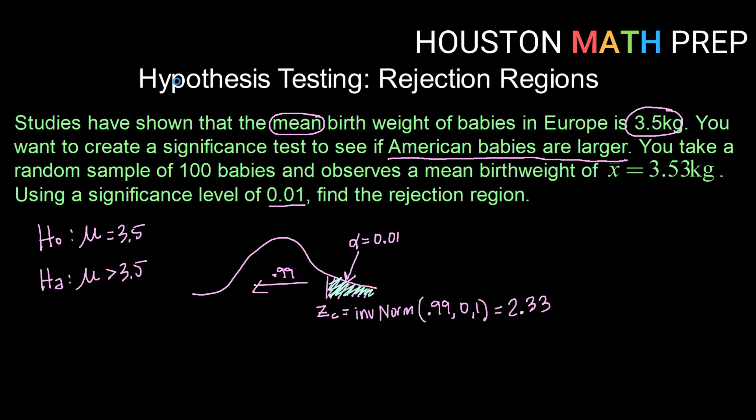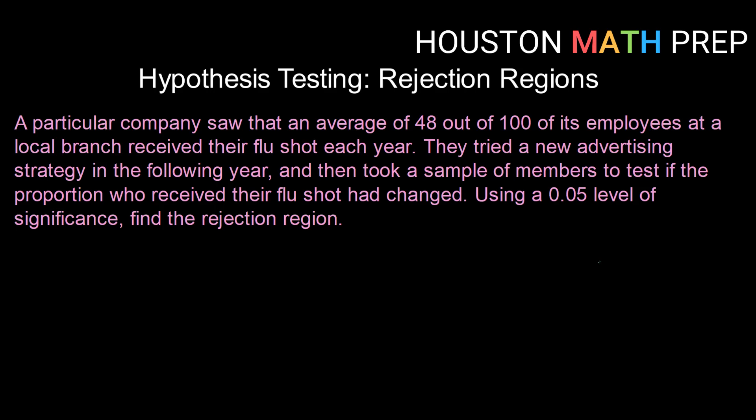Let's check that out one more time. A particular company saw that an average of 48 out of 100 of its employees at a local branch received their flu shot each year. They tried a new advertising strategy in the following year and then took a sample of members to test if the proportion who received their flu shot had changed. Using a 5% level of significance, find the rejection region. To find our rejection region, we have to start with hypothesis statements. Here I'm working with a proportion. So my parameter is going to be p. We see that an average of 48 out of 100 is what they are expecting. So 48 out of 100 is 0.48. Our null hypothesis is that p equals 0.48.